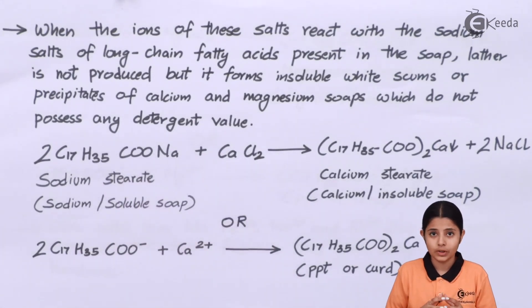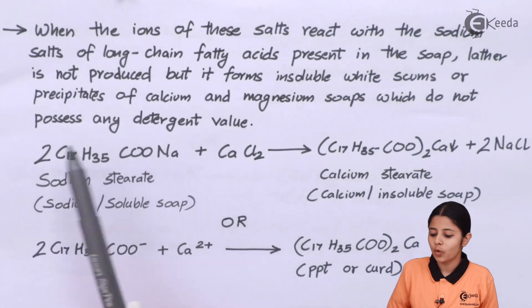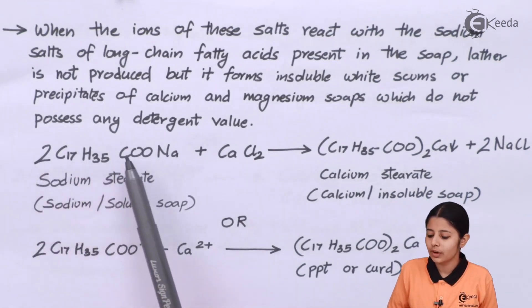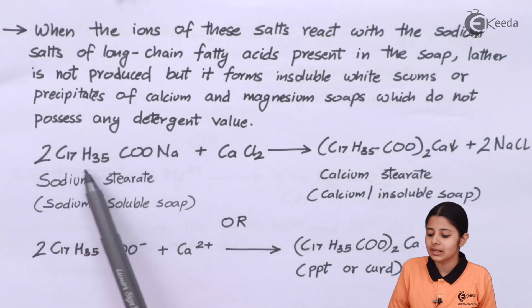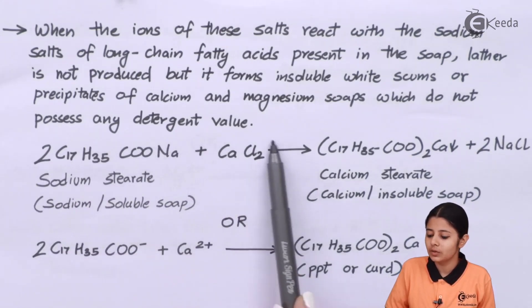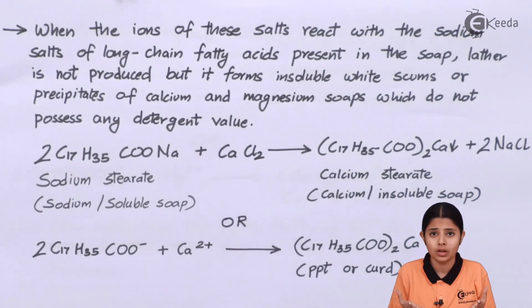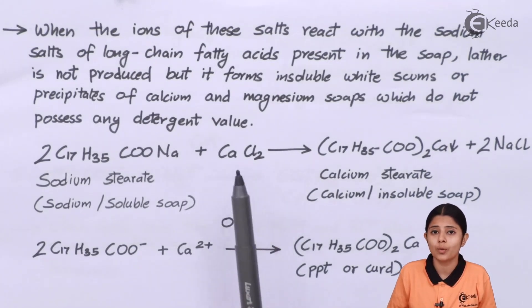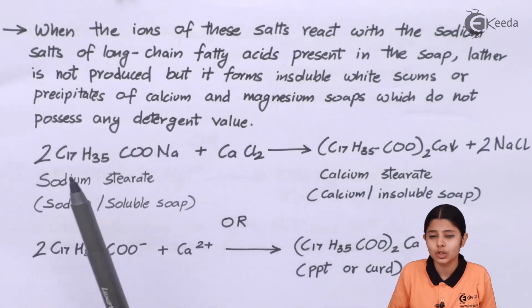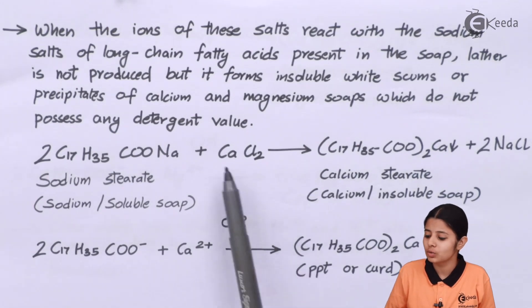Let us see examples of these reactions. We are looking at hard water plus soap. The chemical formula of soap is C₁₇H₃₅COO⁻Na⁺ (sodium stearate). This reacts with CaCl₂ which is present in water. CaCl₂ dissolved in water makes the water hard. The reaction is not between soap and plain water, but between soap and hard water where the hardness is due to CaCl₂.